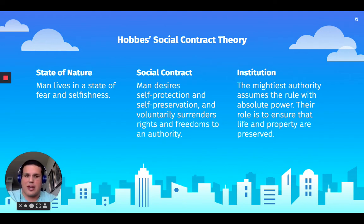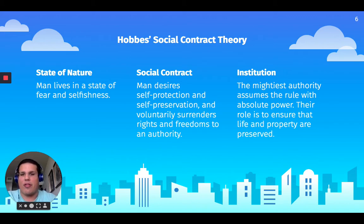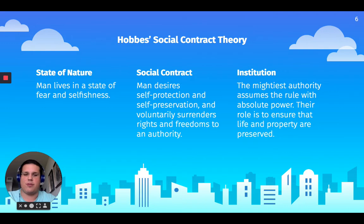The institution that is created is going to be the mightiest authority, which is going to be assuming absolute power. Thomas Hobbes is an absolutist, and their role is to ensure that life and property is preserved.